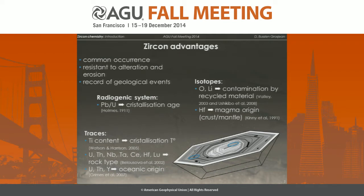Moreover, during its growth, zircon is able to record in its chemistry different information linked to the geological events it undergoes. We are able to distinguish different geodynamic events through different growth periods that we see, and also to read those information by in-situ measurement. We can have access, through the chemistry and the radiogenic system from uranium and lead, to the crystallization age.